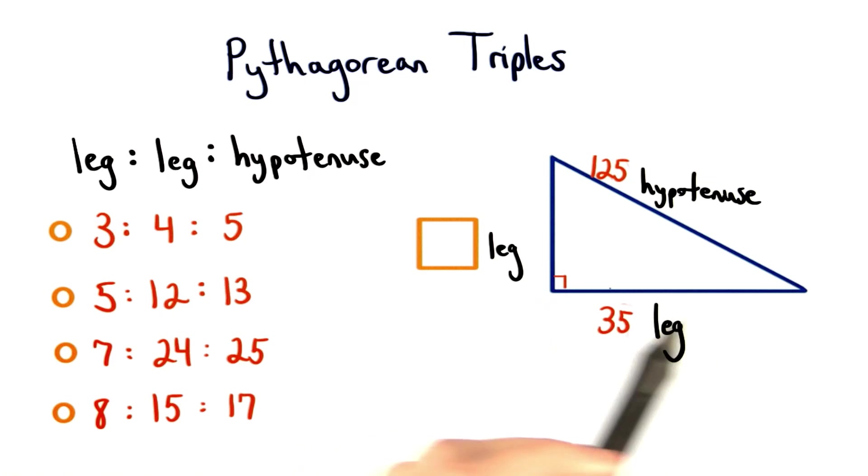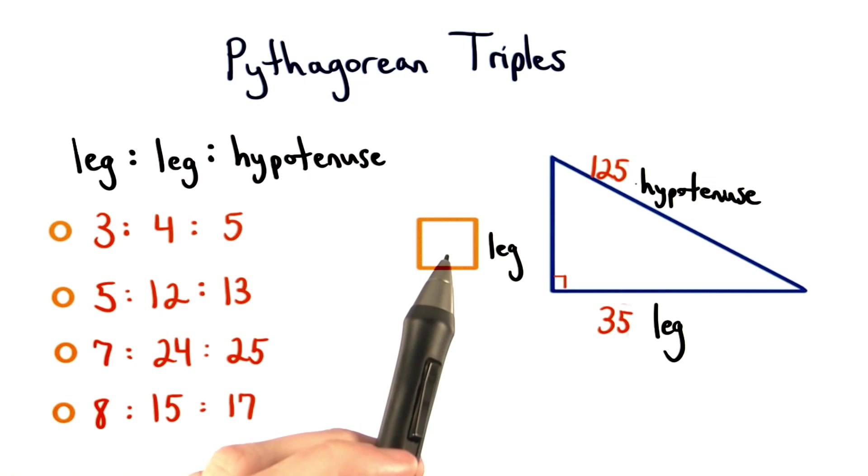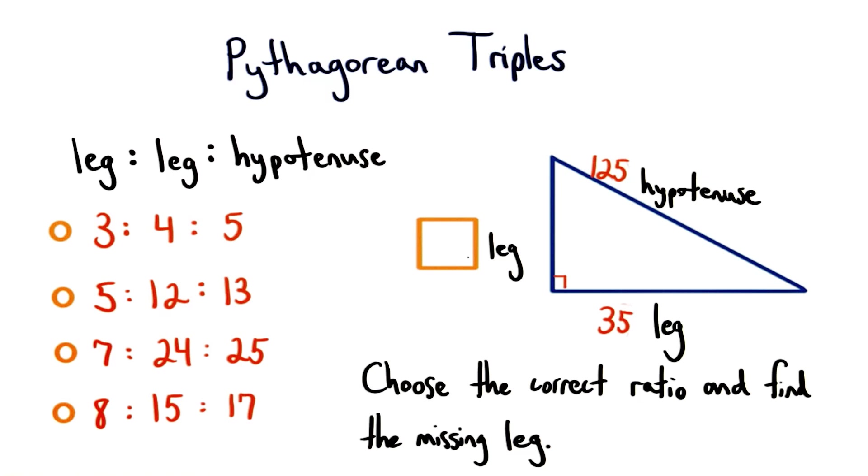For example, if we had this right triangle that had a leg of 35 and a hypotenuse of 125 units, what would be this missing leg? Now, you could use the Pythagorean theorem to solve for this missing leg. But I really want you to think about this in terms of ratios. Which of these ratios can help you find this missing leg? Choose the one that you think it corresponds to, and then fill in the missing number based on a multiplier.